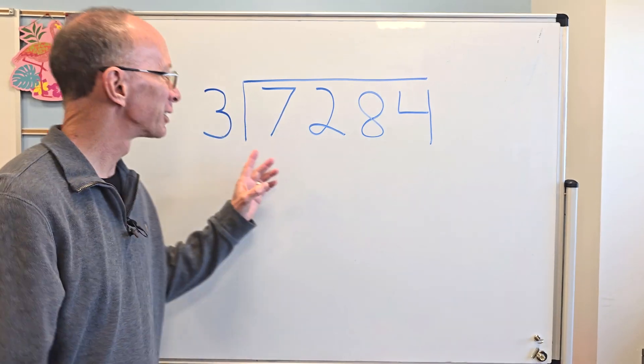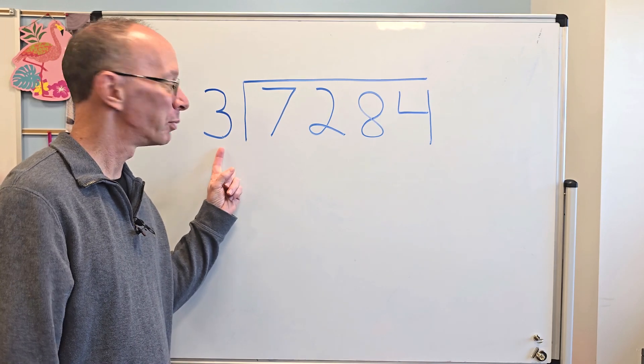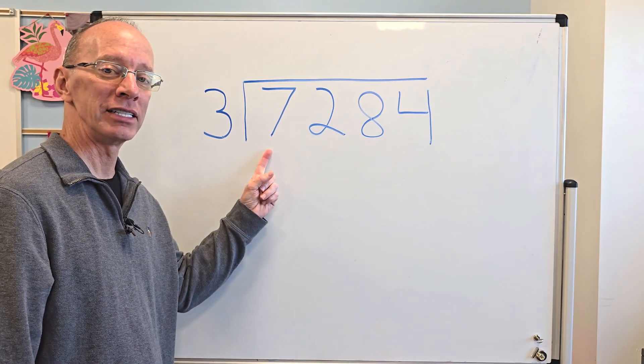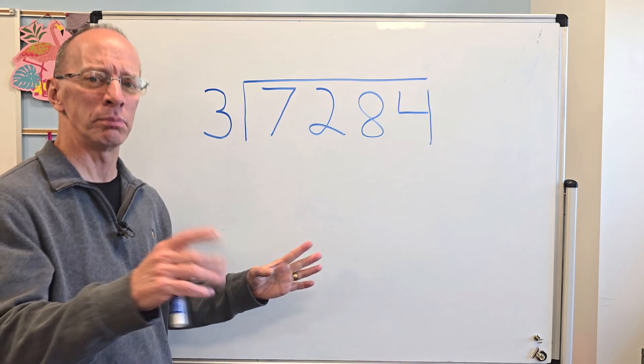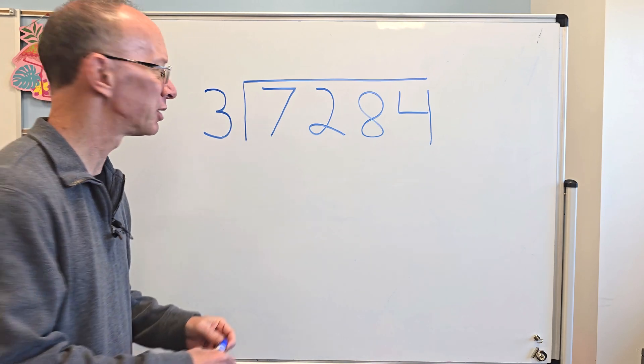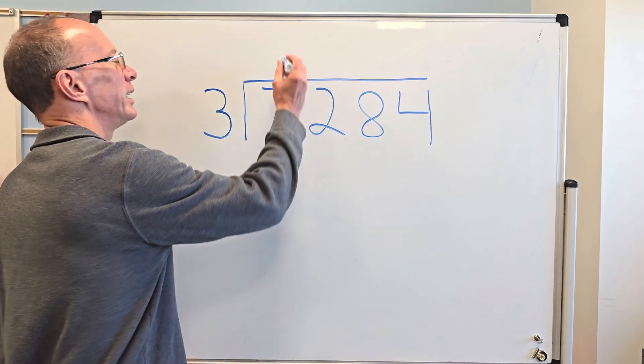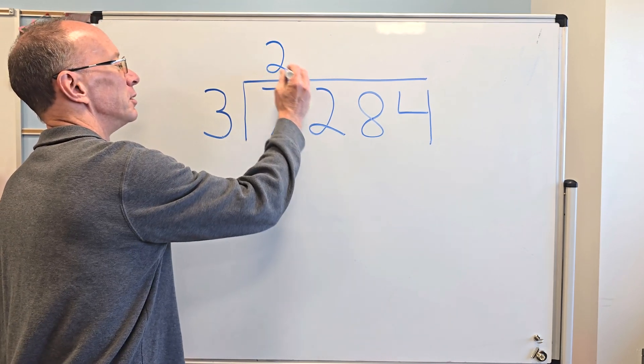All right, so first of all, I need to see if I can put 3 into 7. Can I do it? Yeah. How many times? 3 times 2 is 6, 3 times 3 is 9. Whoa, too big. Let's go back to 3 times 2. So I put the 2 right here, right there. Then I do multiplication all over. 2 times 3 equals 6. Put the 6 here.